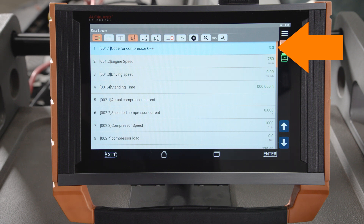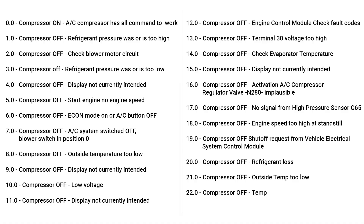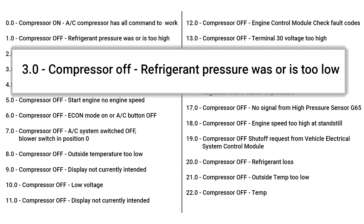The vehicle we are working on today is displaying code 3. Using our chart, we can see code 3 refers to refrigerant is or was too low, and this is preventing the compressor from turning on.